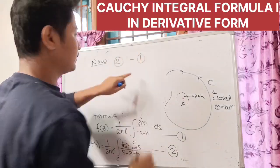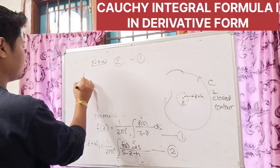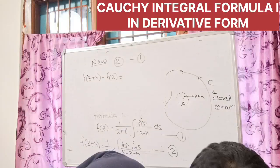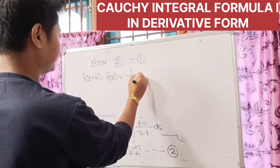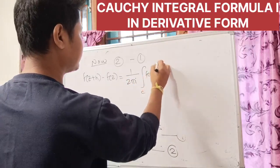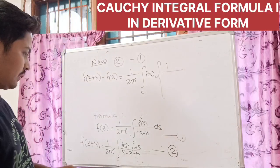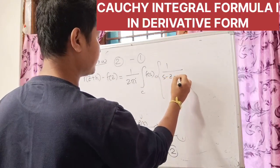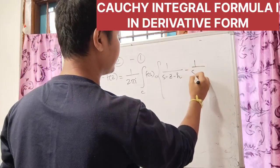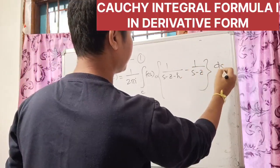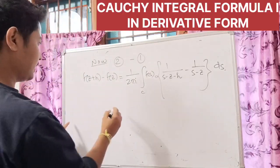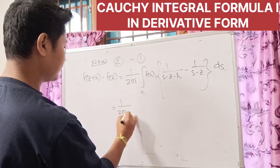Now subtracting equation 1 from equation 2, f of z plus h minus f of z equals 1 by 2πi times integration over closed contour C of f(s) times the bracket of 1 over (s minus z minus h) minus 1 over (s minus z), into ds.